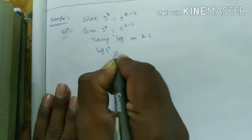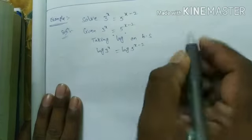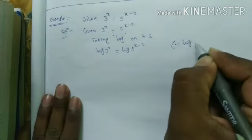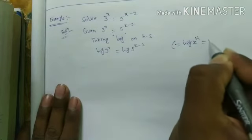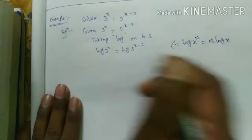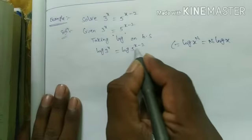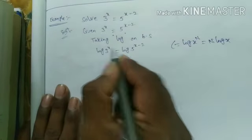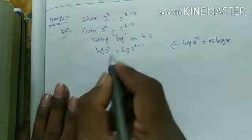Log 3 power x equal to log 5 power x minus 2. Using formula here: log x power n equal to n into log x. See here n is replaced. Here n is x minus 2, and here n equal to x.